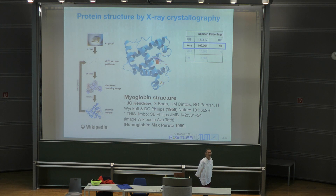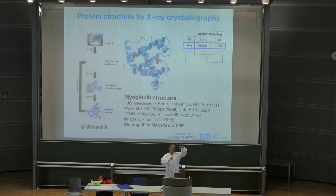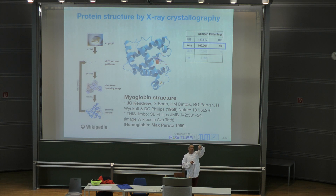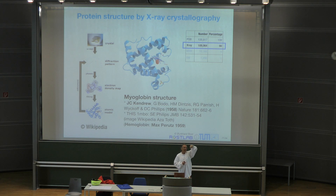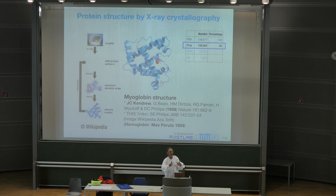The electron density map originates from the scattering of the X-ray beams from different parts of the lattice. Every atom in the lattice that has the same residue or the same atom has the same shape, so it reflects the light in the same way, and that you can compute via a Fourier transform into an electron density.